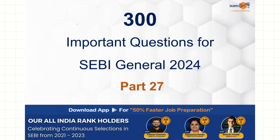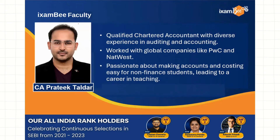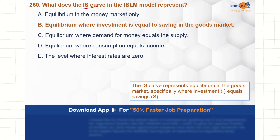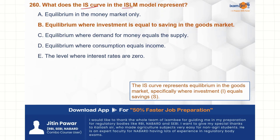Welcome to the 27th part of 300 important questions for SEBI General Examination. In the last video, we were discussing what does the IS curve in the IS-LM model represent. The correct answer is option B: equilibrium where investment is equal to saving in the goods market.